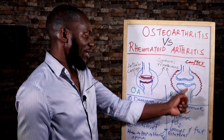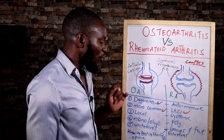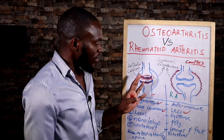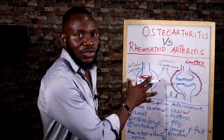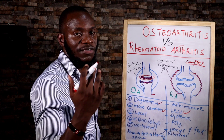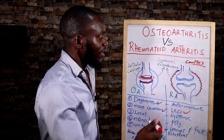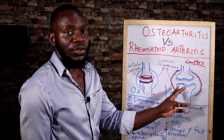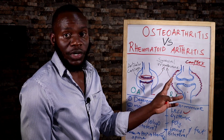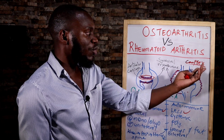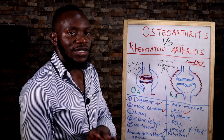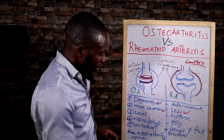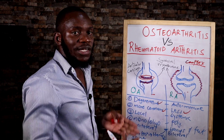Number three: osteoarthritis is local and rheumatoid arthritis is systemic. Additionally, osteoarthritis is mono or oligo-articular, meaning it attacks only one joint — the joint that suffered the inflammation or trauma. Rheumatoid arthritis attacks multiple joints, because the immune complex is not specific to one joint; it attacks all joints that have the synovial membrane.